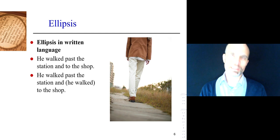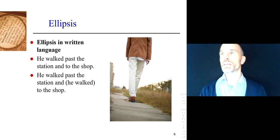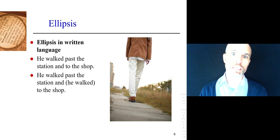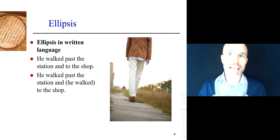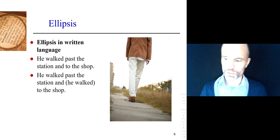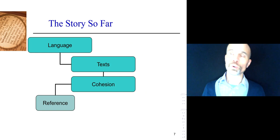So, anaphorically — pointing back from that ellipsis — the ellipsis is the gap between 'and' and 'to.' To describe ellipsis, you can only say where the gap is: there's a gap between 'and' and 'to.' There is an elliptical gap between 'and' and 'to' that anaphorically presupposes 'he walked.' That's how you'd write or say it.